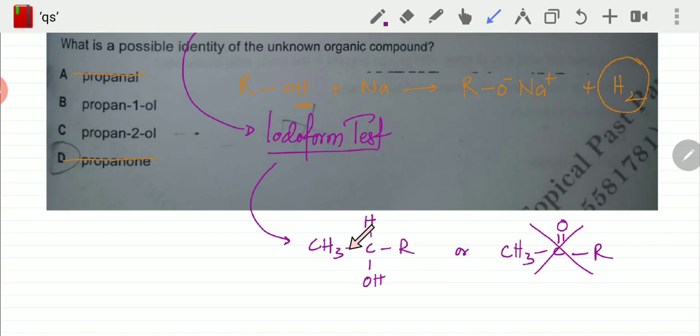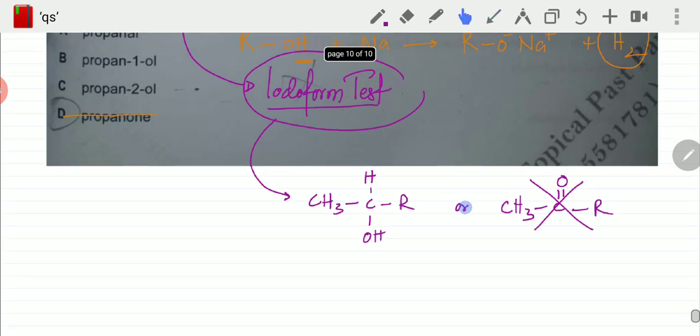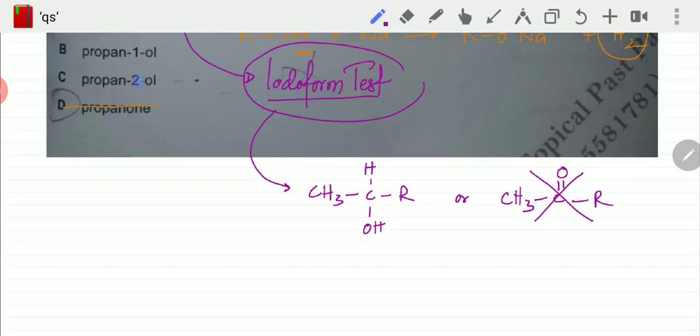So I have propan-1-ol and propan-2-ol. Remember, iodoform tests are for a very specific structure. The molecule must contain methyl with the carbon and an H and an OH—it has to have the exact structure. Option C according to this is going to be the correct option.